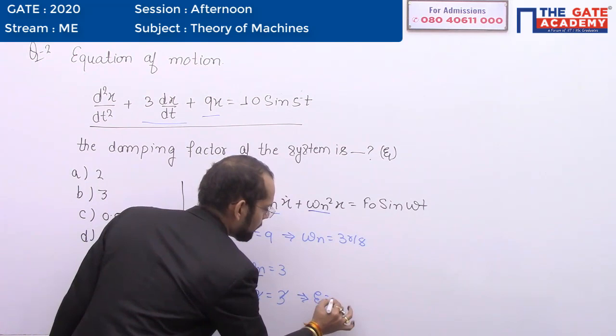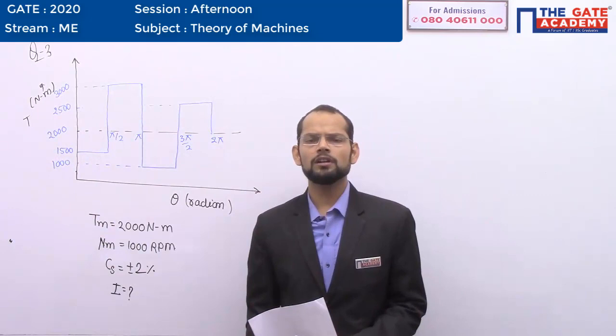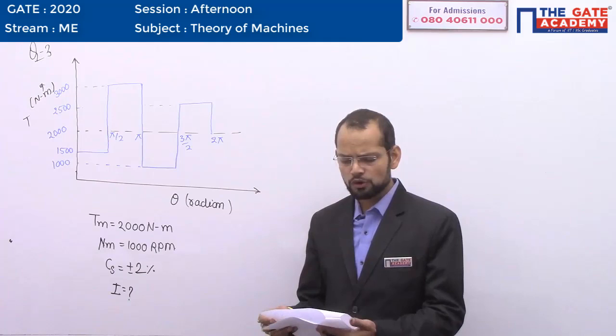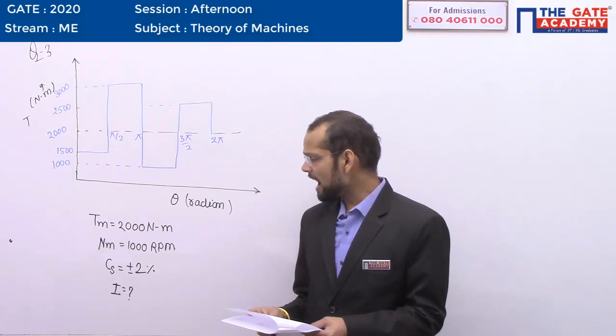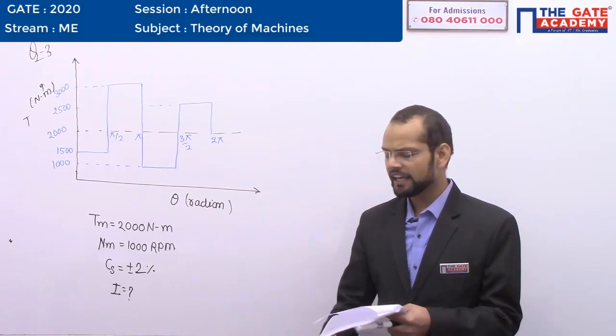So option C is the correct answer for the damping factor question. Now we will see another question asked from the topic of flywheels. The question states: the turning moment diagram of a flywheel fitted to a fictitious engine is shown in a figure. The mean torque is given as 2000 N·m, and the average engine speed is 1000 rpm. For a fluctuation of speed within ±2%, find the mass moment of inertia of the flywheel in kg·m².